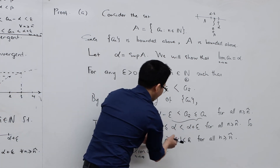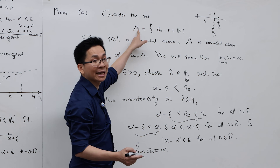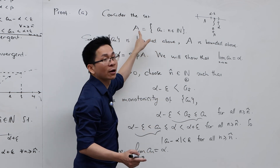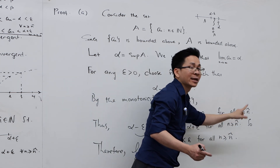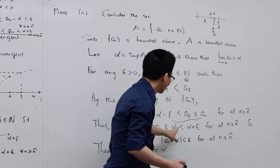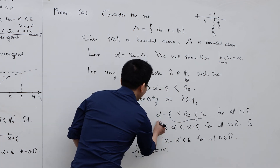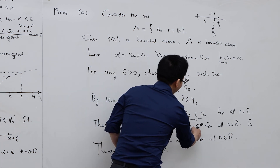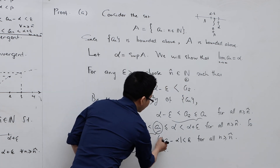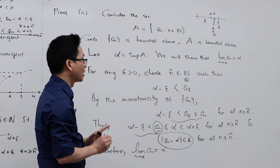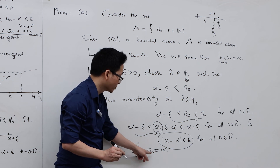How is the second part satisfied — why is aₙ ≤ α? Because α is an upper bound of the set A, every element of A is less than or equal to α. In particular, aₙ ≤ α for all n ≥ n̂. And certainly α < α + ε. Therefore, for all n ≥ n̂, aₙ lies in (α - ε, α + ε), which means |aₙ - α| < ε. By the definition of convergence, lim aₙ = α as n → ∞.